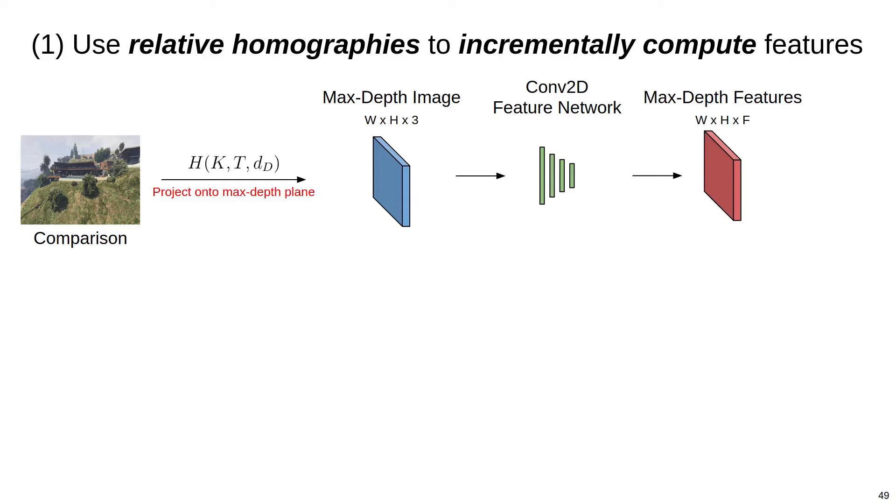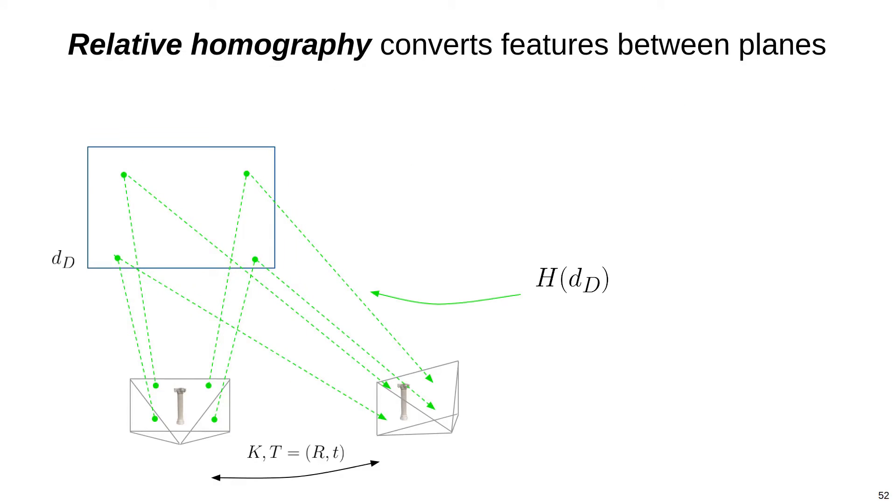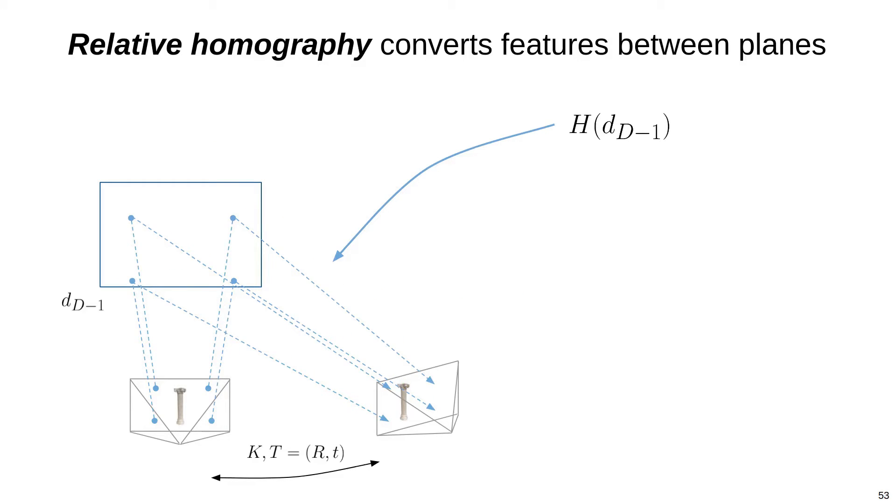The way this works is that we take our image and project it onto a plane corresponding to the maximum depth sample. We then feed the projected image through our 2D convolution-based feature network to generate an initial feature map. We then take that feature map, which we'll call fd here, and use it to compute the features for the plane corresponding to the next depth sample, f d-1. The way we compute f d-1 from fd is using the relative homography between the planes.